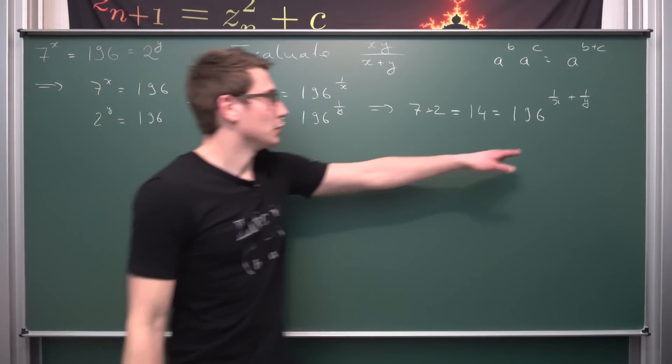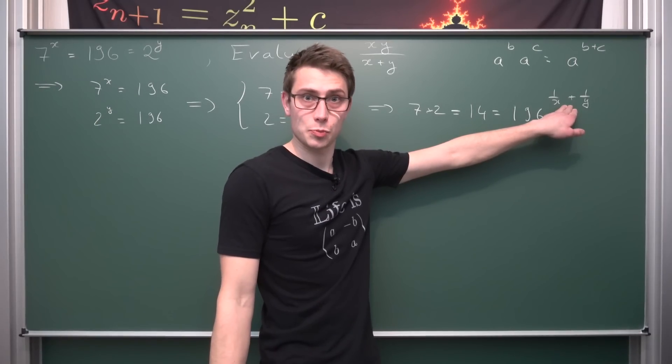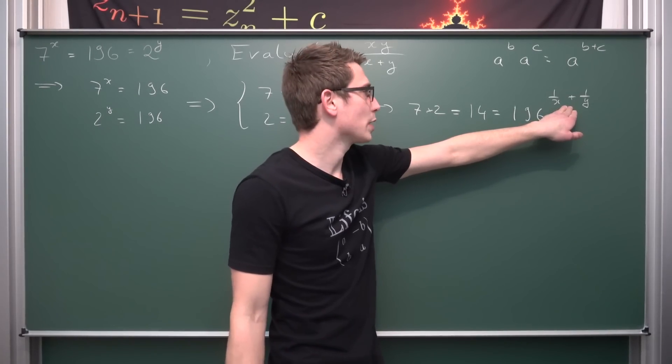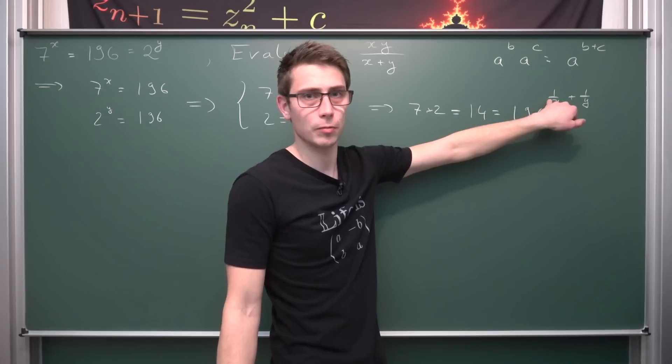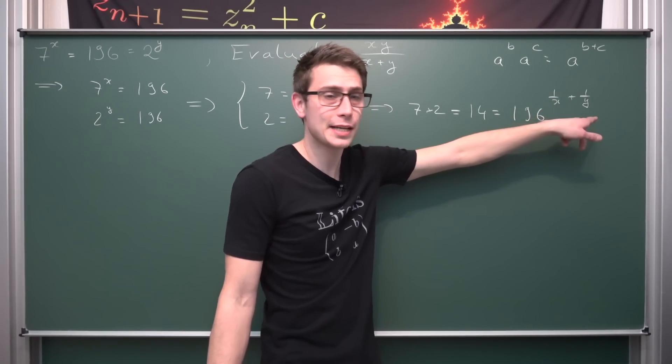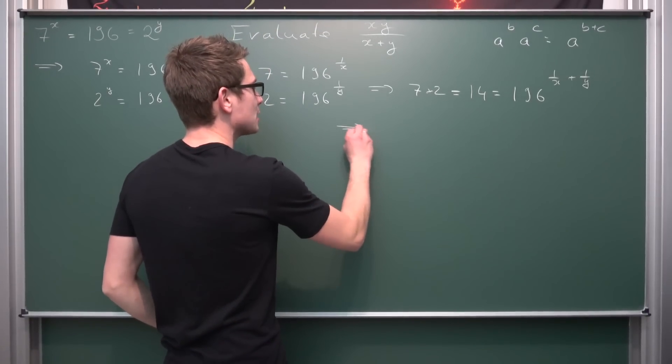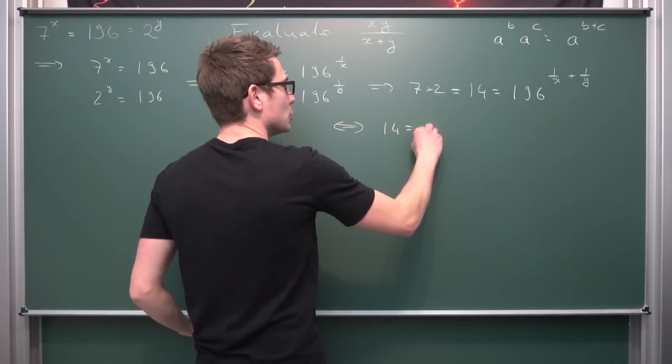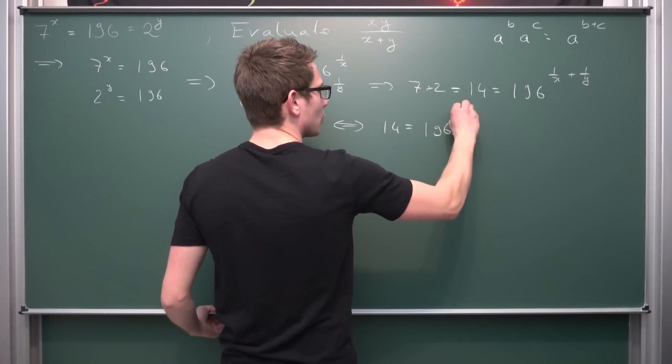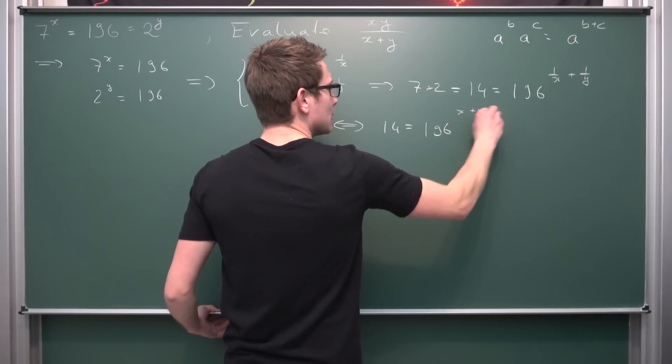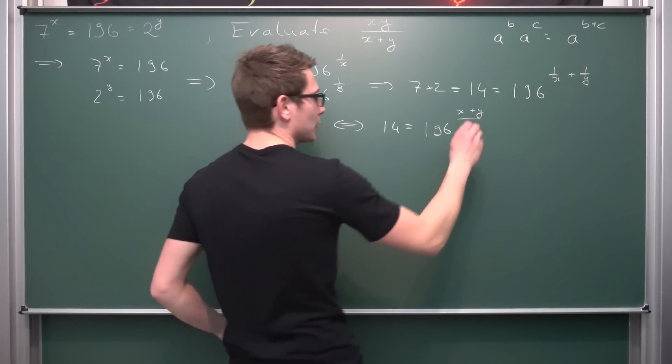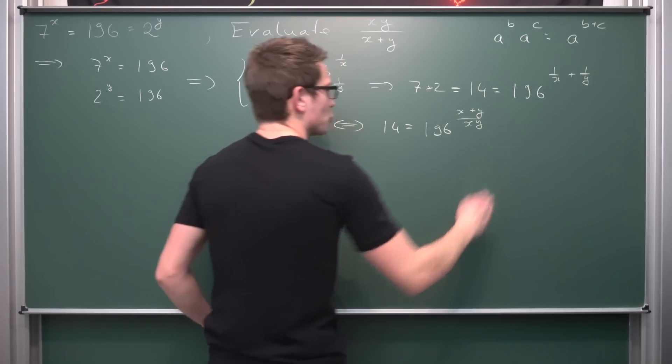Now what we can do is actually add the exponents together. So what we are going to do is expand this first one by y over y and the second one by x over x, giving us overall that 14 is equal to 196 to the, then we get x plus y, since addition is commutative, we can do this, divided by xy.